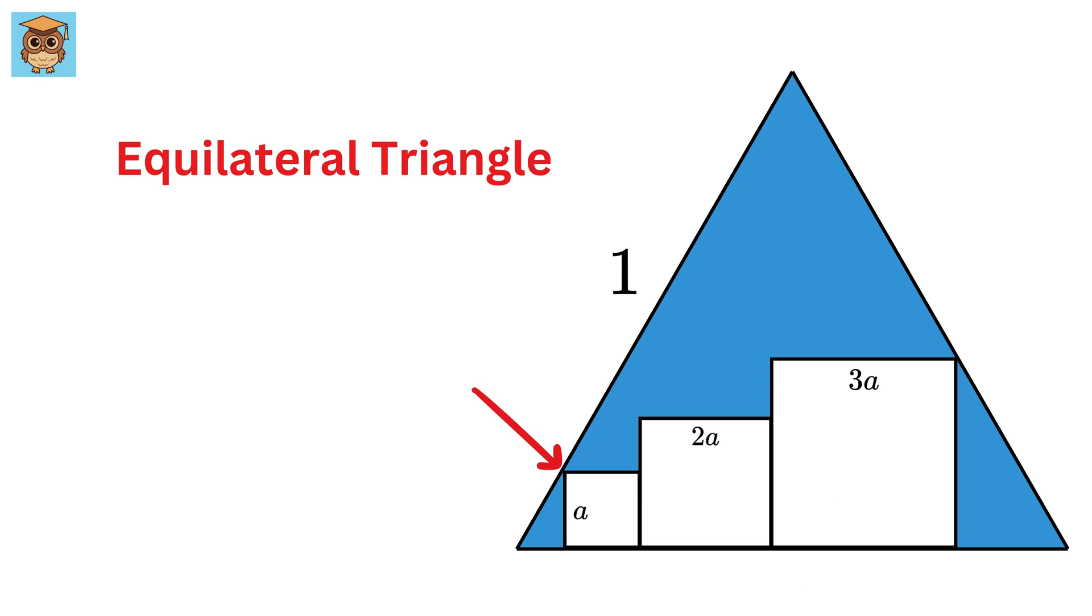This vertex of the smaller square is on this side of the triangle, and the vertex of the bigger square is on this side of the triangle. Lastly, these sides of all three squares lie on this side of the triangle.